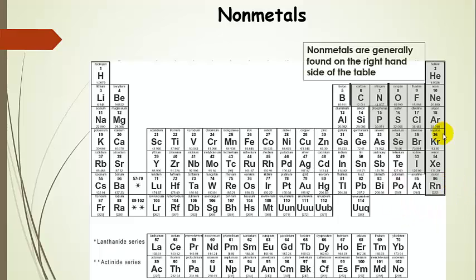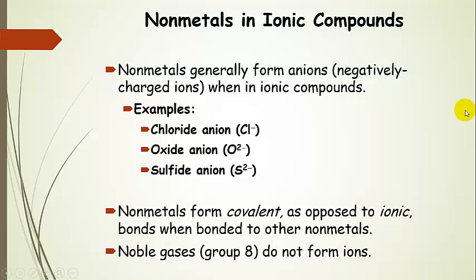So now let's take a look at the nonmetals. These guys right here. This is basically the nonmetal part of the table, the right-hand side of the table. They generally form anions, or negatively charged ions, when they're in ionic compounds.